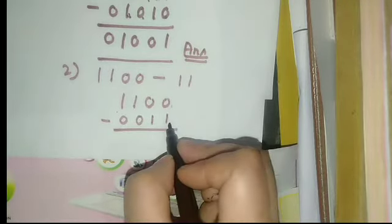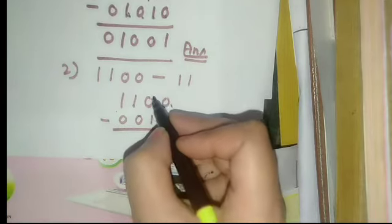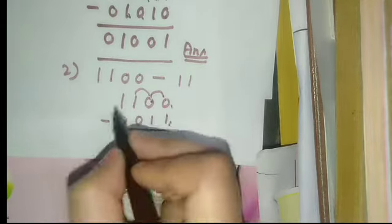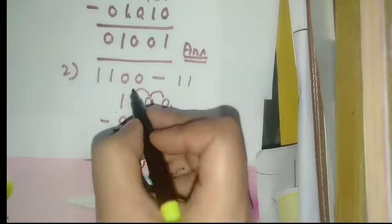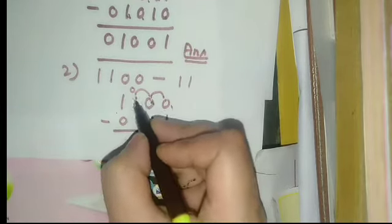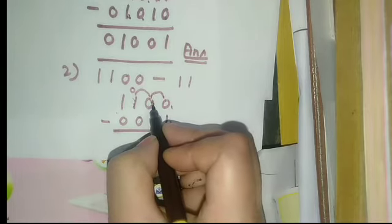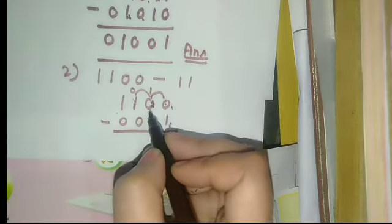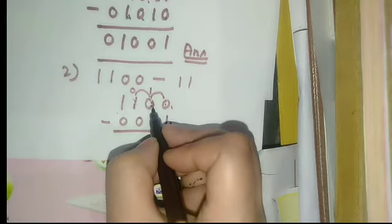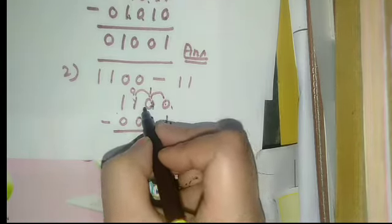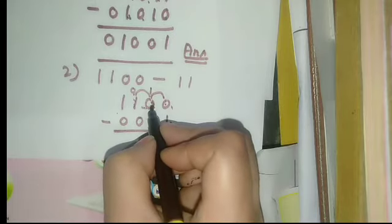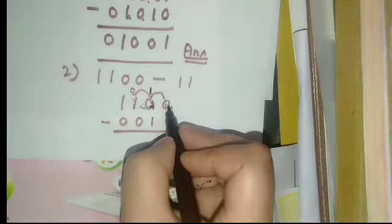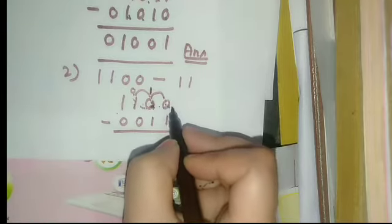For 0 minus 1, we need to borrow, but the next position is also 0, so we ask further. After giving the borrow, that position becomes 0, and after taking the borrow it becomes 10, which is 2. In 2 it gives 1 to the next column, so it becomes 1. Now that position is 10, meaning 2, and 2 minus 1 equals 1.